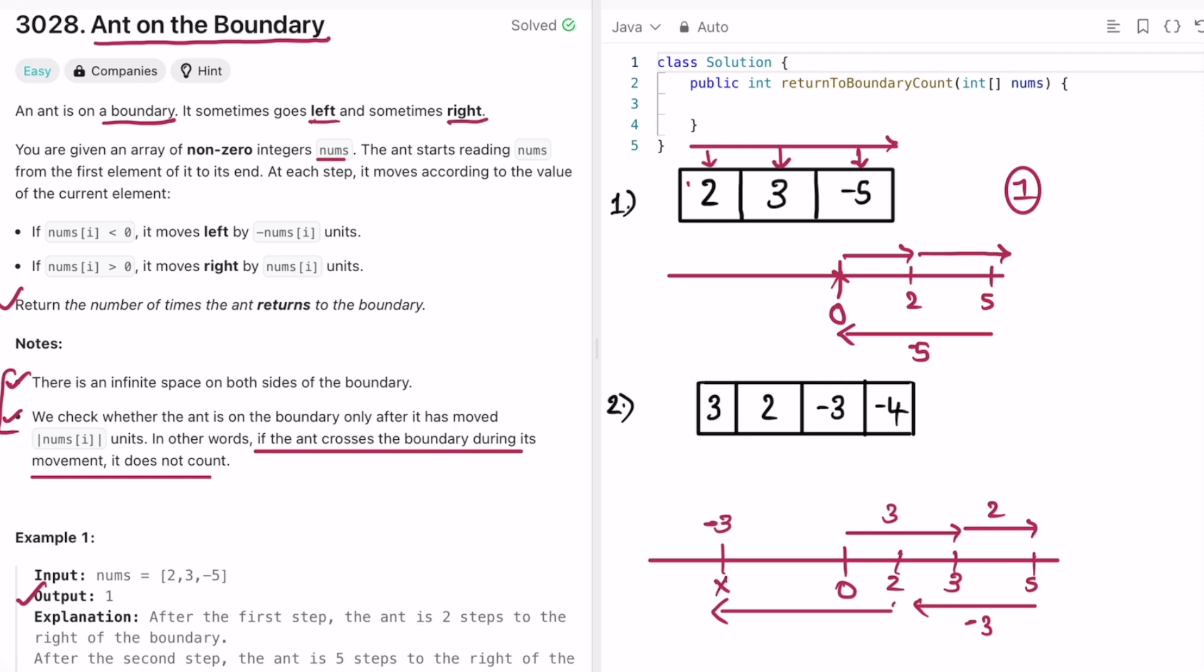So the ant is now at minus three and we reach the end of the array. And the second condition states that if it crosses the boundary it doesn't count, it exactly has to come to the boundary. So here it's crossing the boundary so it doesn't count. And in the whole process the count of it coming back to the boundary is zero. So zero is the output for the second example.